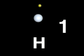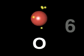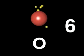A hydrogen atom with one valence electron needs one additional electron to complete the first energy level. An oxygen atom has six valence electrons and needs two additional electrons to complete the second energy level.